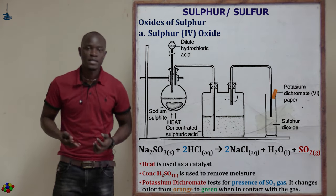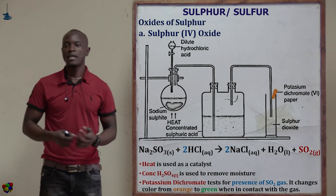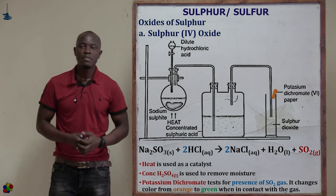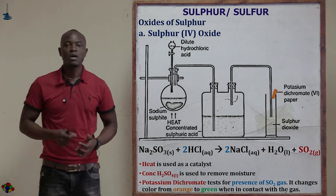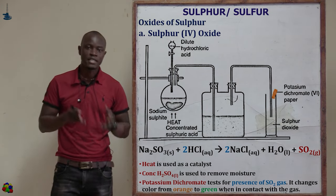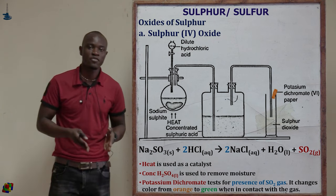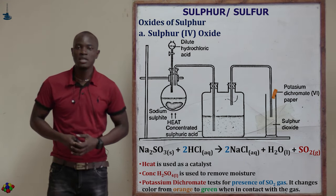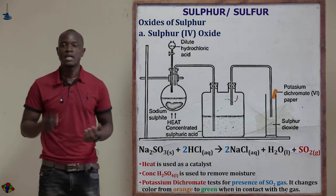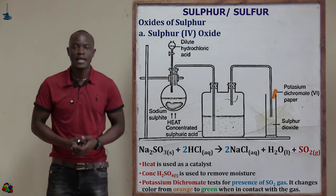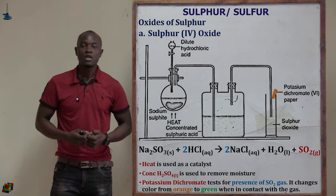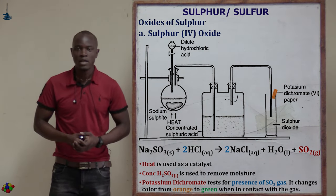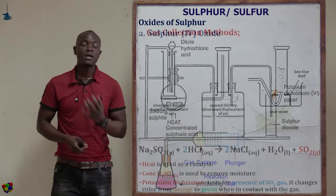The resulting gas is passed through concentrated sulfuric acid and then collected using the downward delivery method. The function of the concentrated sulfuric acid is to dehydrate — that is, to remove traces of water vapor from the sulfur(IV) oxide gas. Anytime in an exam you see a gas being passed through concentrated sulfuric acid, always know that it is acting as a dehydrating agent.